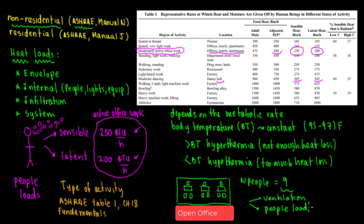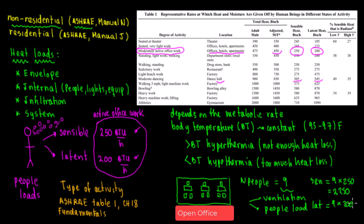For nine people, sensible load = 9 × 250 = 2,250 BTU/hr. Latent load = 9 × 200 = 1,800 BTU/hr. When you have a big gym, dancing hall, or multi-purpose event hall with 89 or 100 people, this heat load becomes very significant — that's exactly why the people load matters so much in heat load calculations.